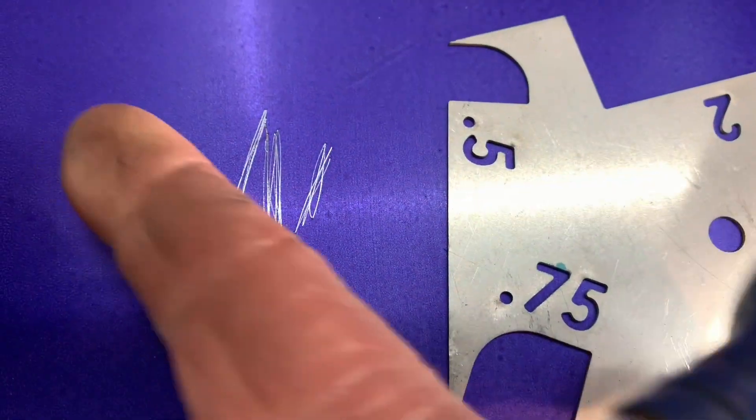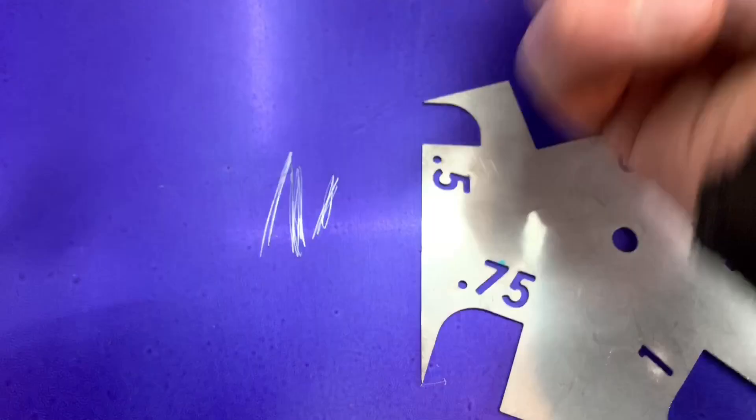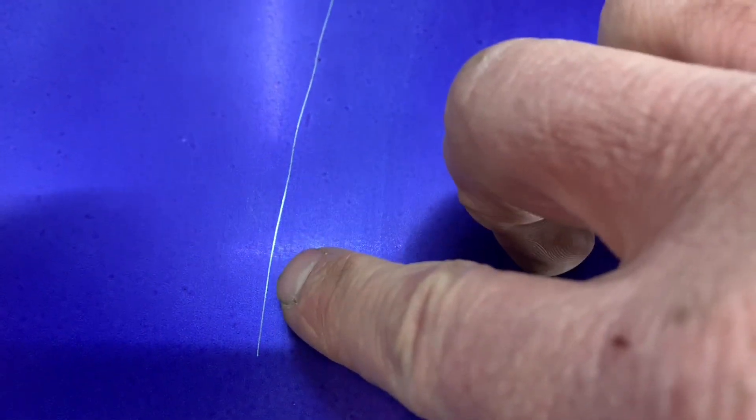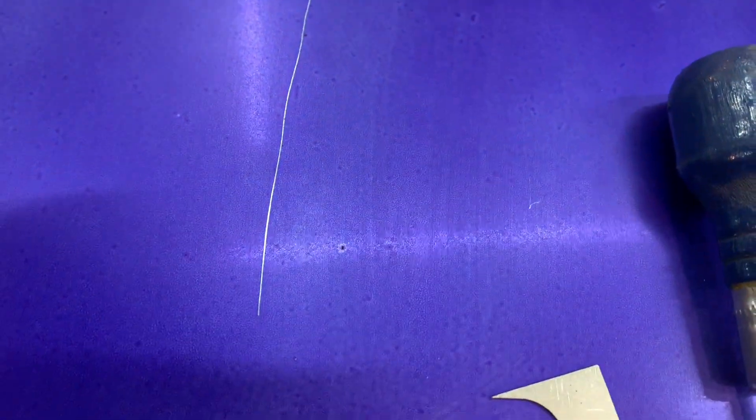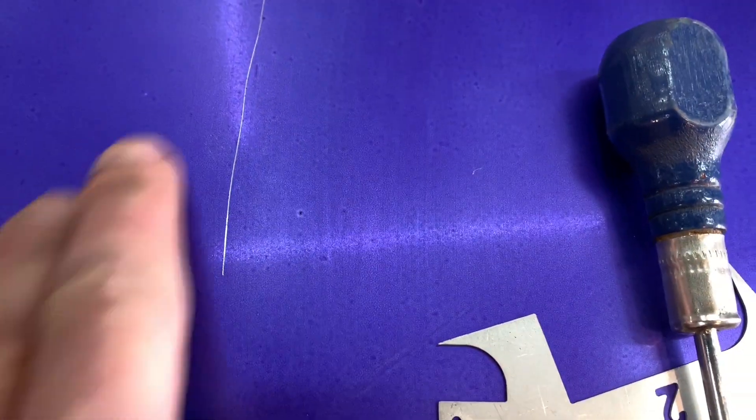And then that way, you know, when you lay out that line, it's just super easy. And it's easy to see. And then when you run a grinder or a cutter or a shear or whatever, it just makes it super nice. You can see it that way.